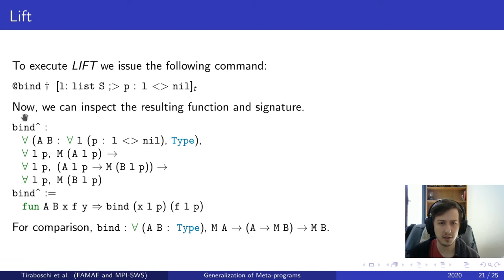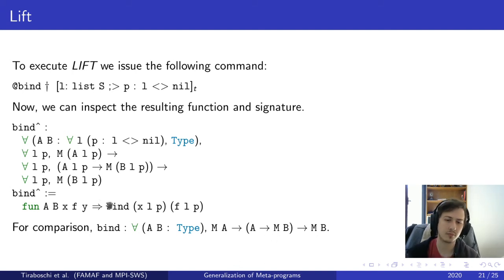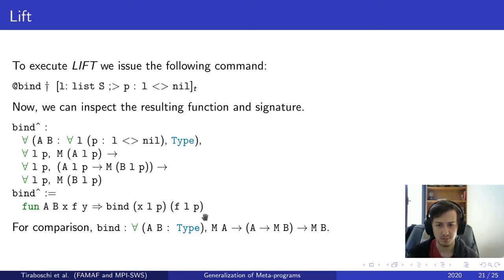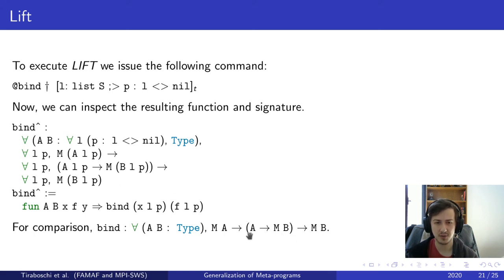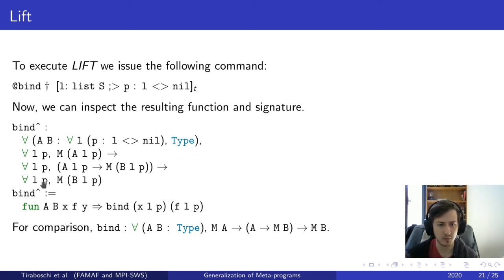We're now ready to execute LIFT. We issue the following command: here we have bind — the function we'll lift — and with the dagger notation we call LIFT using the telescope we defined. Now with that we can lift and inspect the resulting function and signature. Comparing the new signature with the original bind: on the original one we had A and B as types, now we have A and B as dependent types — we take L and P and then we have a type. Before we had M A, now we have for-all P, M A(P). We're basically adding the dependencies everywhere, and we end with for-all L P, M B(L, P). This is exactly what we wanted for the fixpoint.